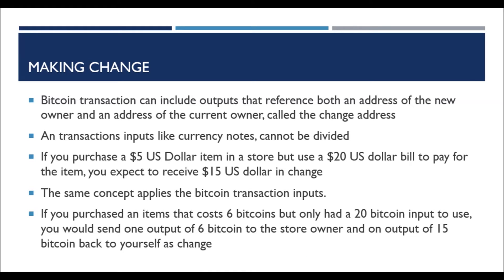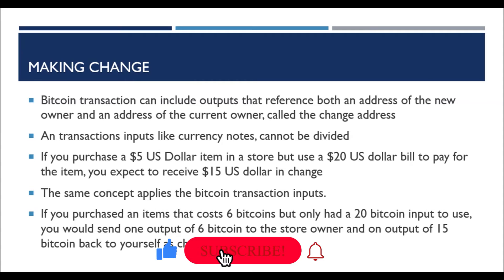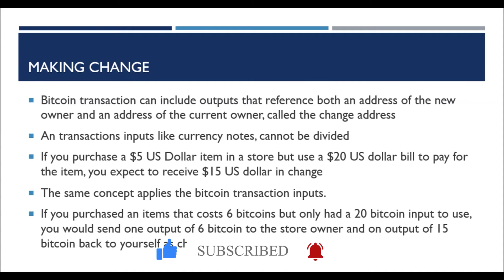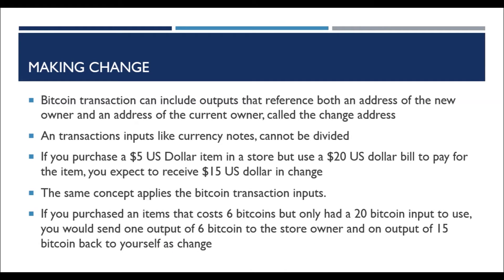I told you this in the last lecture: if I want to send Bitcoin to someone and I have 2 Bitcoins, I will send it as an input. It will go to the address of the person's account, and I will send only as much as required. If only 1 Bitcoin was needed, I still have 2, so one will be held and 1 Bitcoin will be forwarded back to my address.